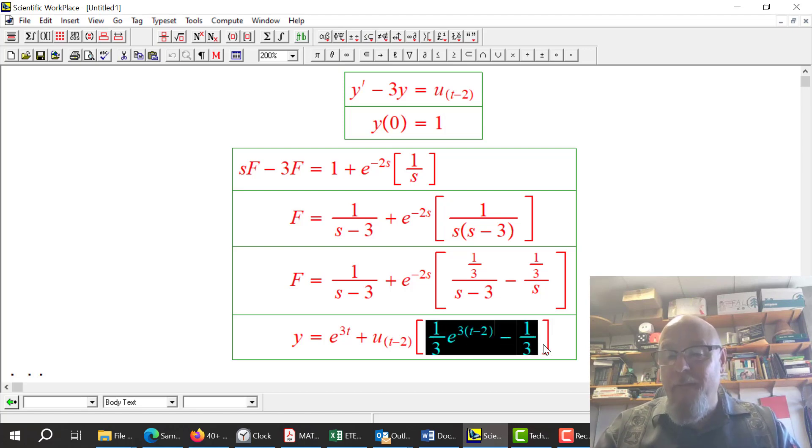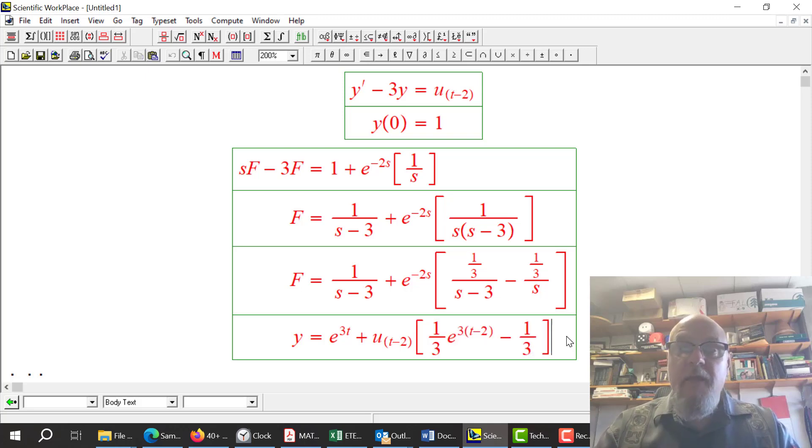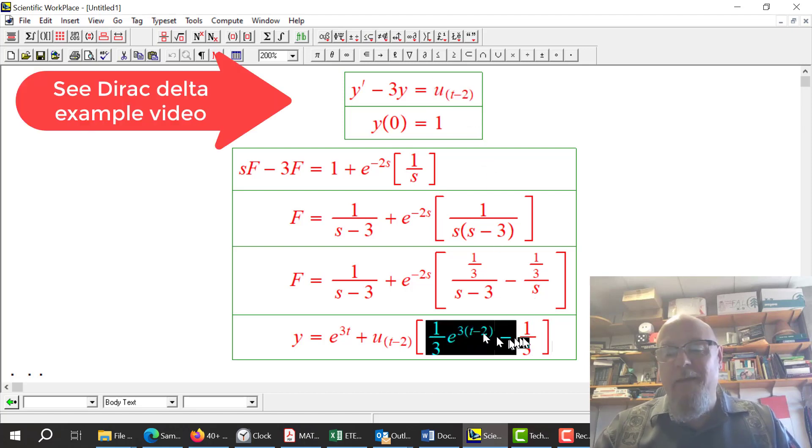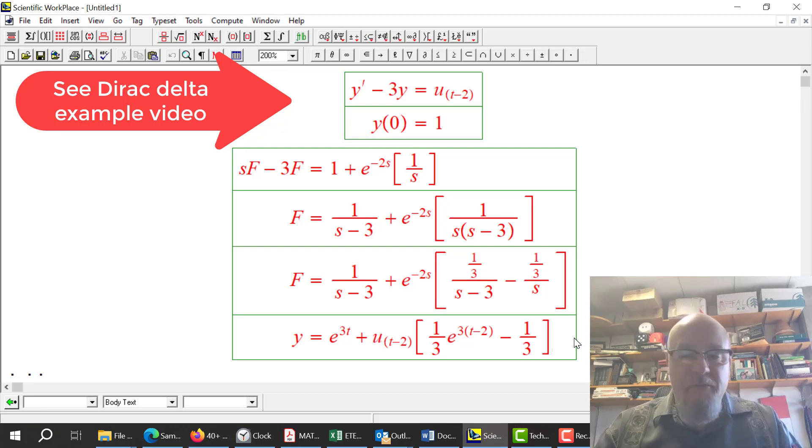At 2 seconds, the square bracket piece is 0. Because it's 2 minus 2, that's e to the 0. A third minus a third is 0. So the thing I'm turning on is 0 right when I turn it on and then it changes. That's different if this had been a Dirac delta function instead of a step function. In the Dirac delta case, it doesn't have to be 0.